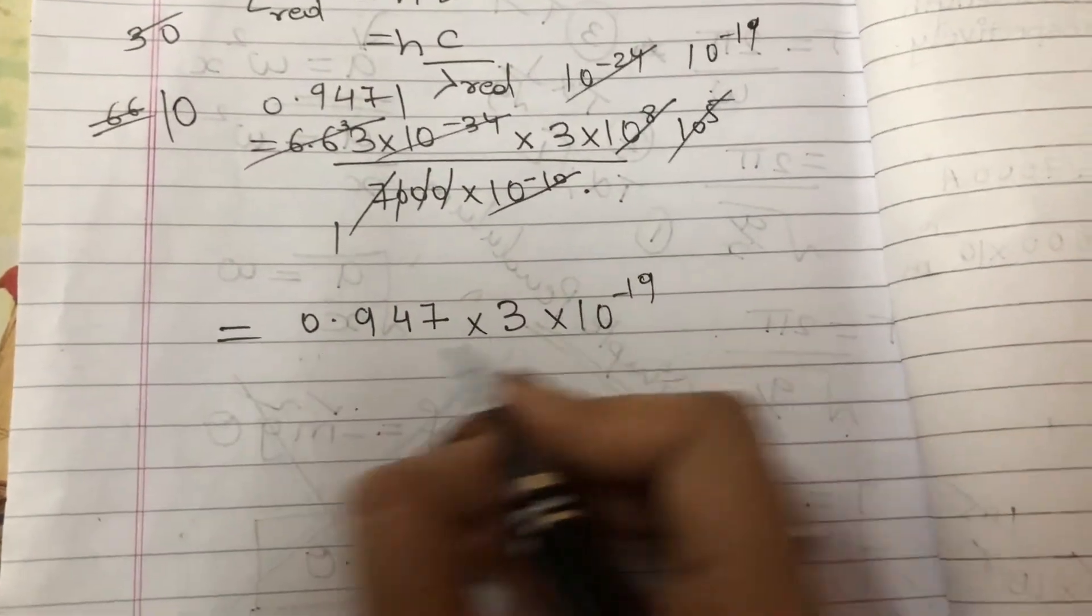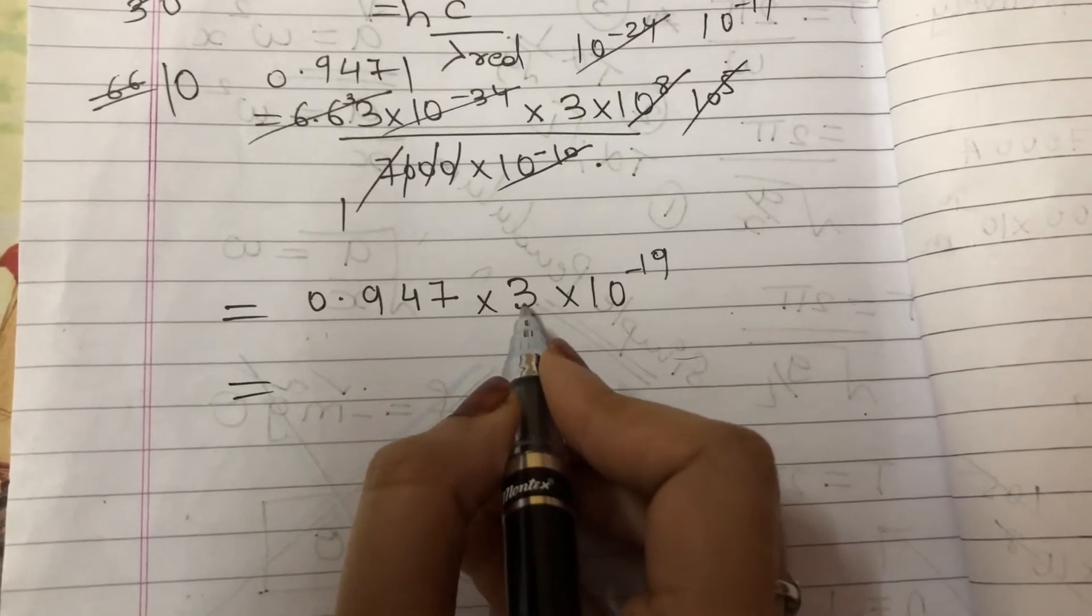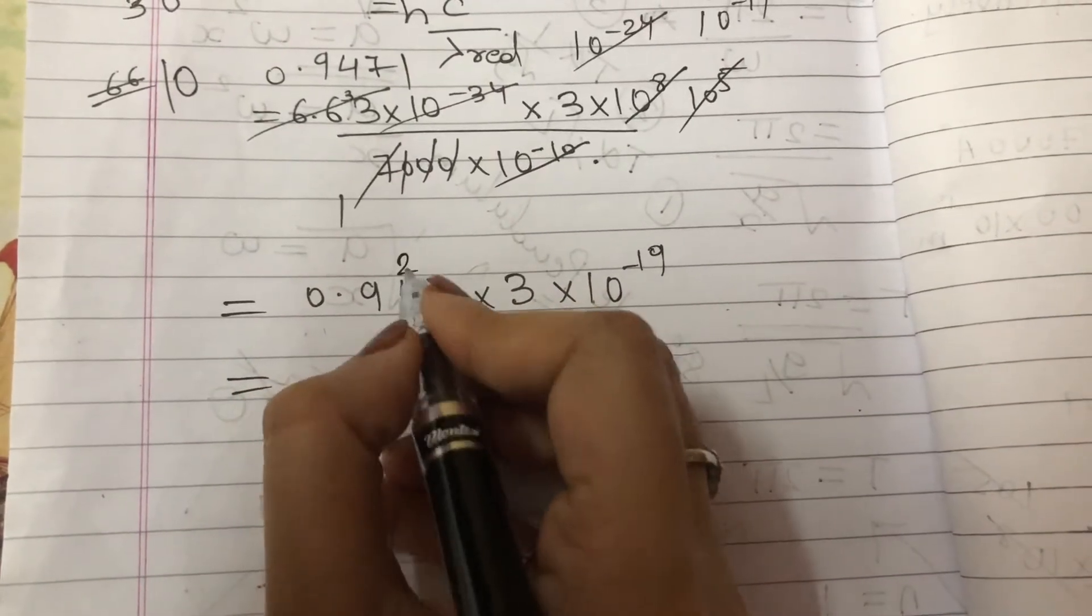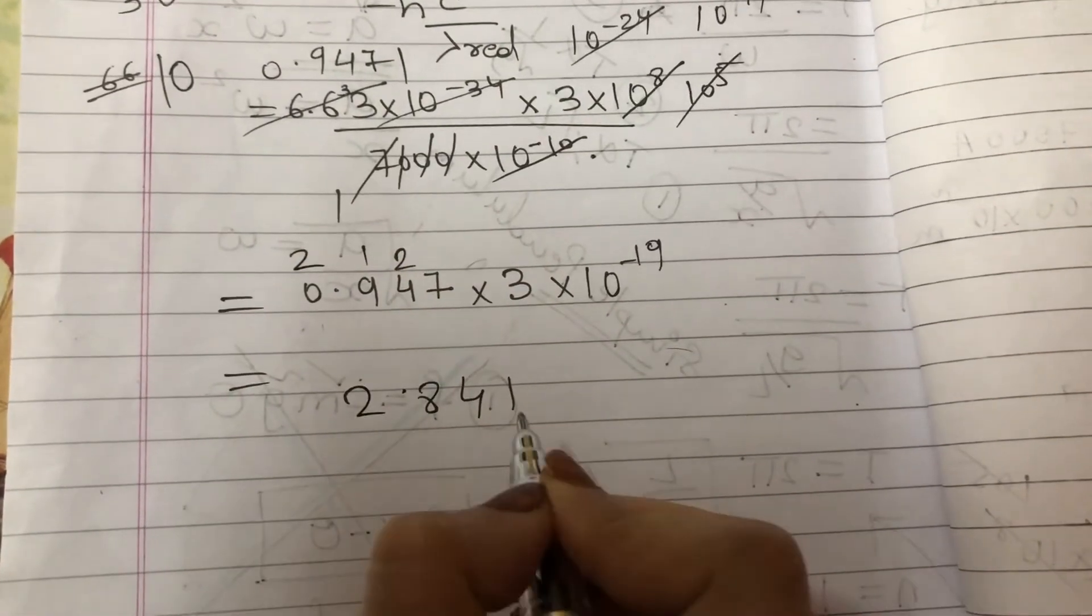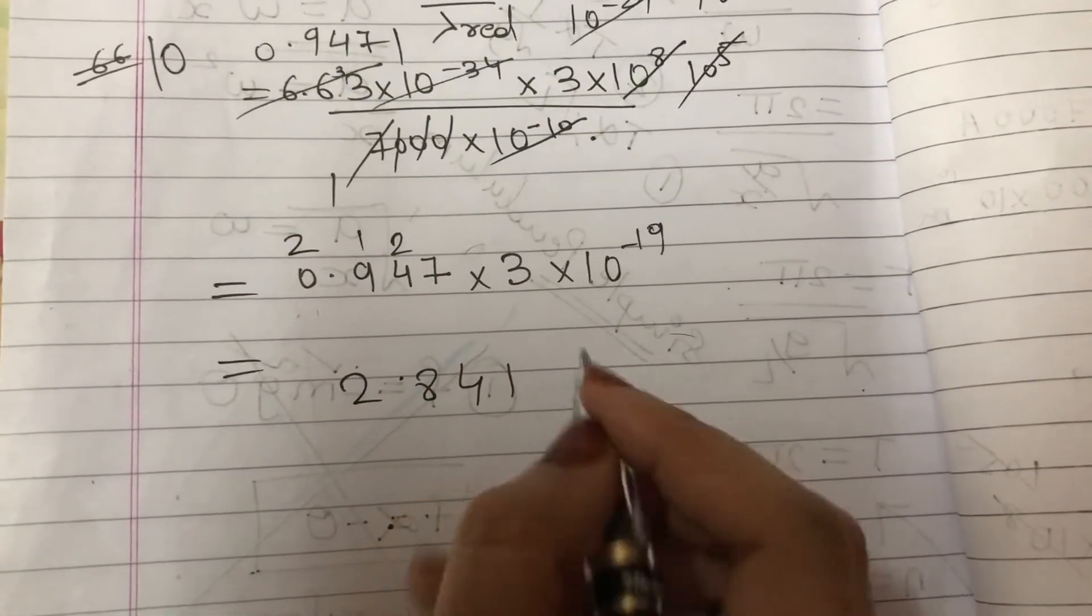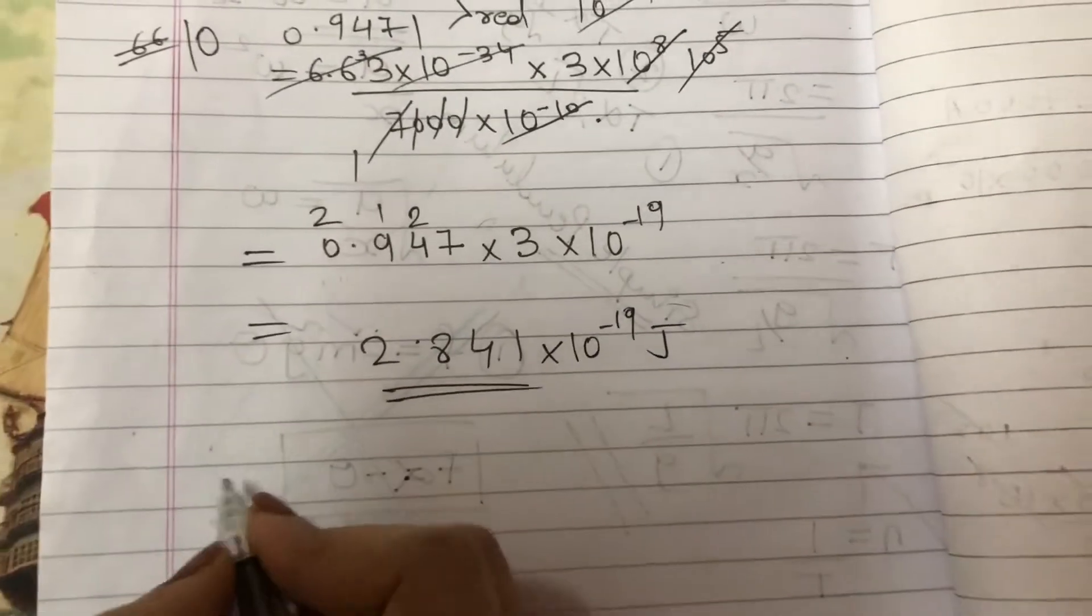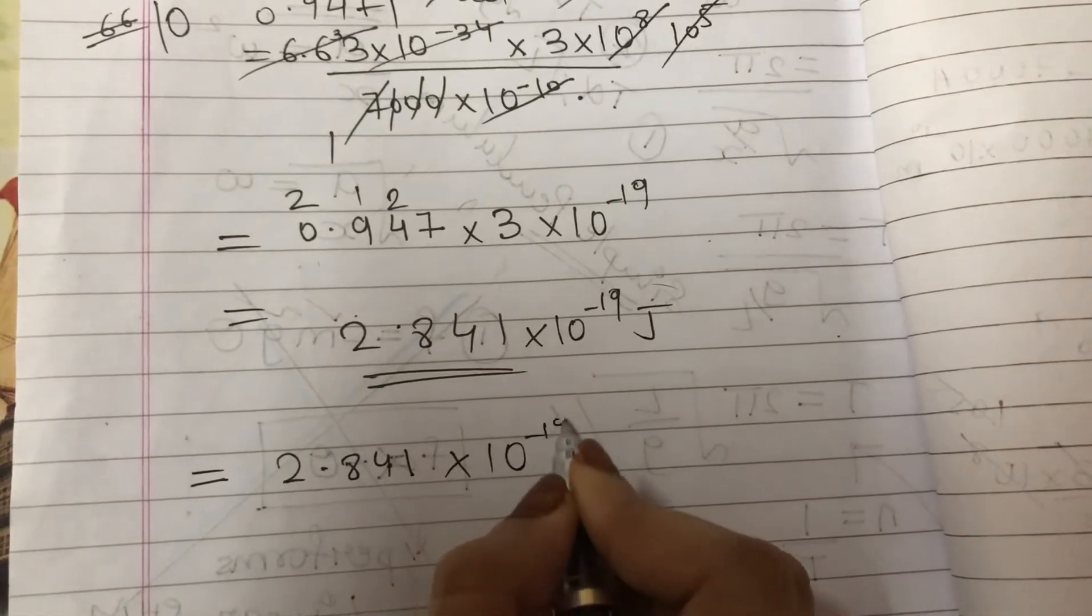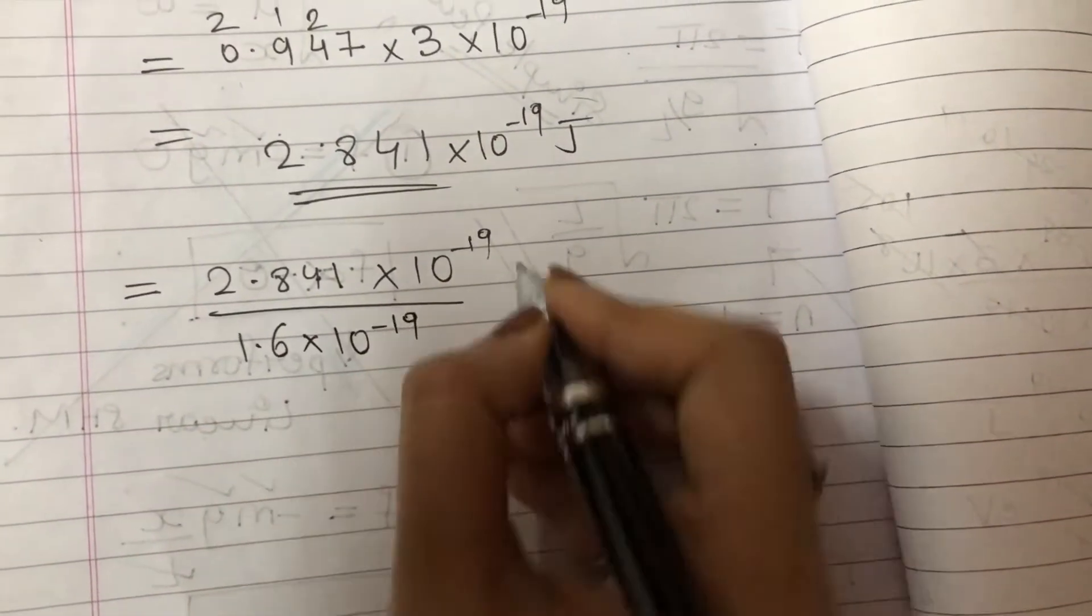Now here we can multiply 0.947×3. 3×7 is 21, 3×4 is 12 plus 2 is 14, 3×9 is 27 plus 1 is 28. So it is 2.841×10^-19 joules. If I want to convert it into electron volts, 2.841×10^-19 divided by 1.6×10^-19 electron volts. 10^-19 cancels.